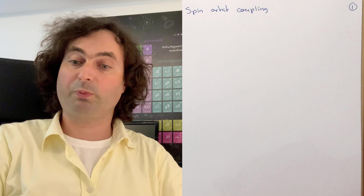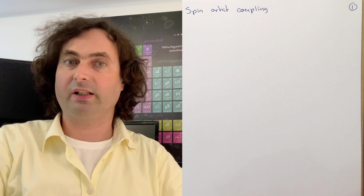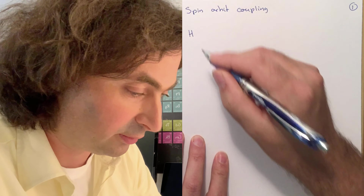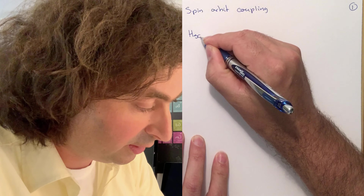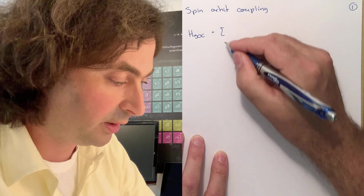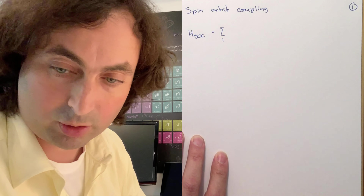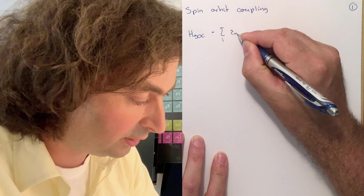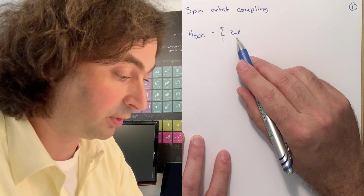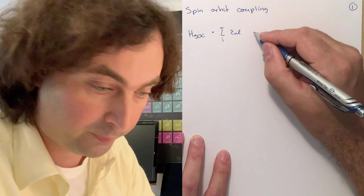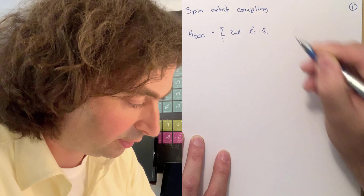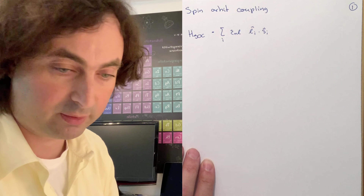When you think of spin-orbit coupling, this is a relativistic effect, and the Hamiltonian you can derive from the Dirac equation is given by a one-electron operator summing over all electrons, and then a coupling constant that depends both on the principal quantum number n and l, and then the angular momenta inner product with the spin of the electron.